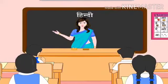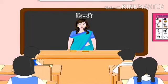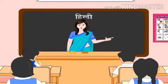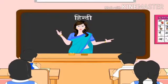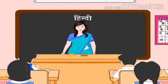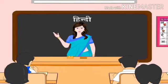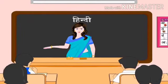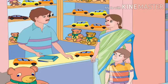Bhasha ek vasadhan hai, jis ki dwara samasth praani jagat apne bhaav ko prakat karta hai. Pashu-pakshi vibhinn dhwaniyon dwara apne bhaav prakat karte hain, parantu manushya ne in dhwaniyon ko vyavasthit roop diya hai. Aadim kalin manav, pashu-pakshiyon ke saman, tarah tarah ki aawazein nikal kar apne bhaav sampreshit karta tha. Kaal antar mein, manushya ne apni buddhi dwara bhaav ko prakat karne ka vyavasthit sadhan khoj nikala, jise bhasha kaha gaya.